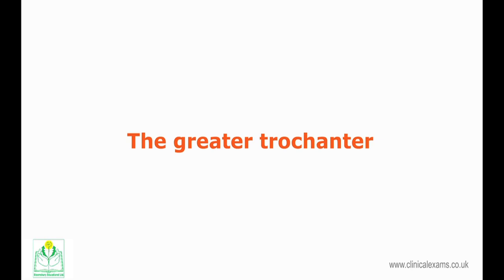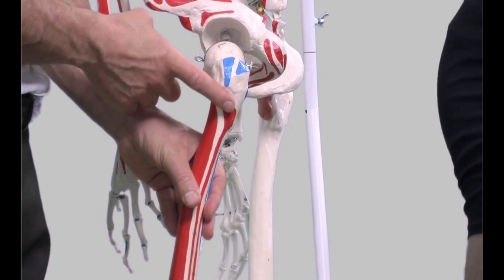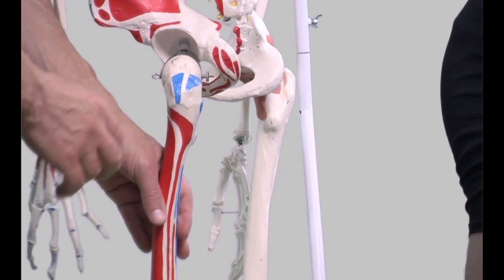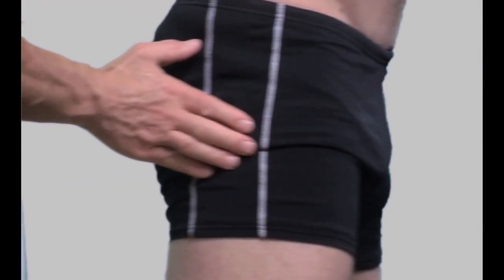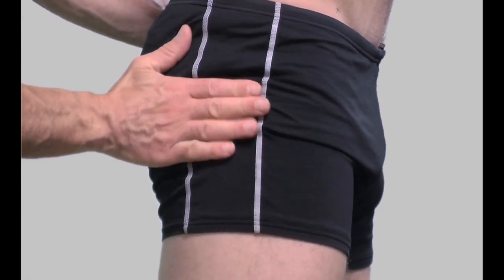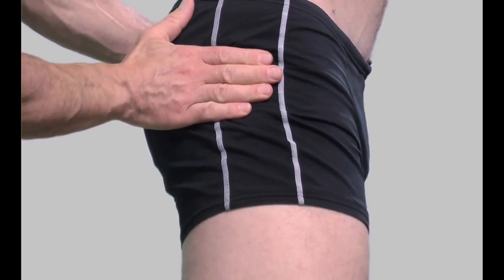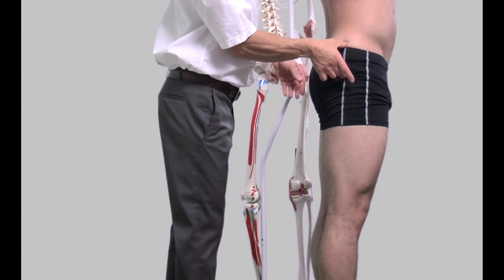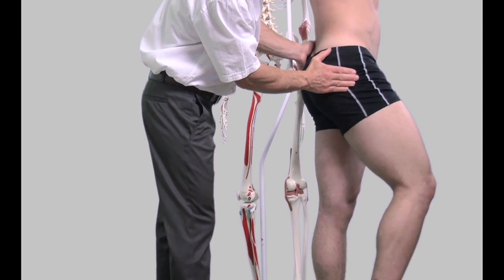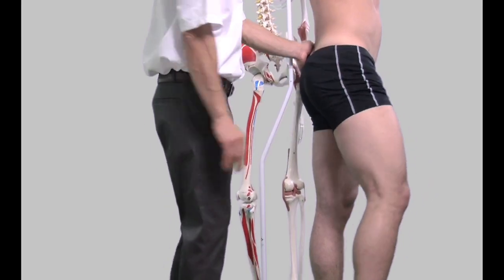The greater trochanter of the femur is a large projection on the proximal part of the femur that serves for muscle attachments. It is located lateral to the hip joint and is easy to palpate, just inferolaterally in relation to the hip joint. If the hand is placed flat against the skin about 10 cm below the iliac crests and the subject rotates their hip while standing, you will feel the movement of the large rounded protrusion of the greater trochanter.